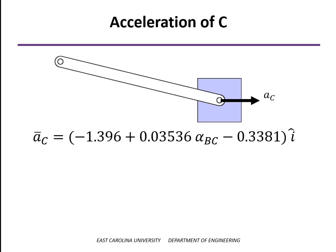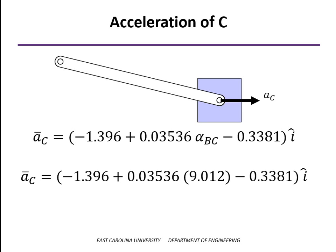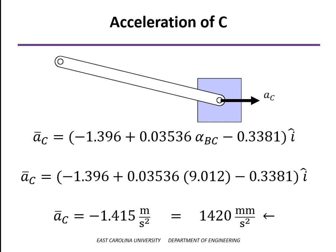What we're left with, the terms in the x direction, or the i terms, now that we know alpha BC, we can plug that in. And here's our result, minus 1.415 meters per second squared. It's a negative number, so the acceleration is going to be to the left, just as the velocity was. So when the crank is at 45 degrees, our calculations show that the slider is moving back to the left, and it's also increasing speed as it moves to the left.